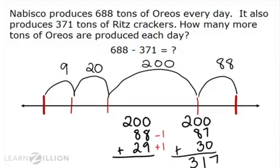Now we have 200 plus 87 plus 30, which I can do in my head to get 317.